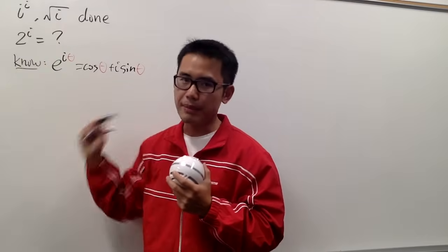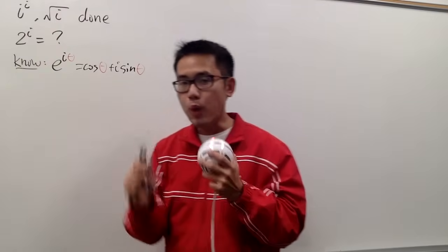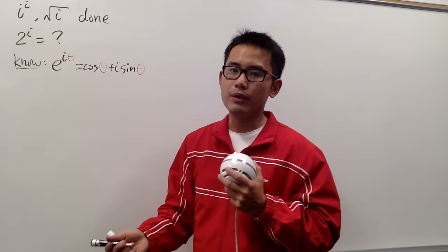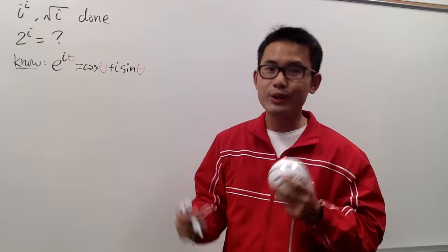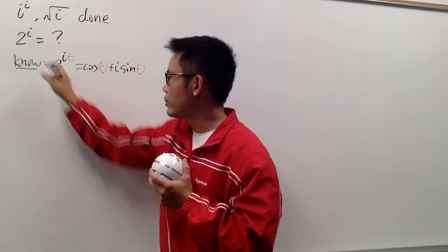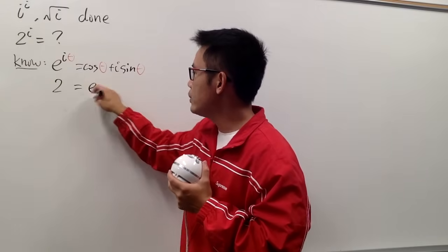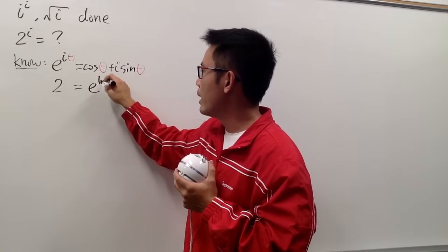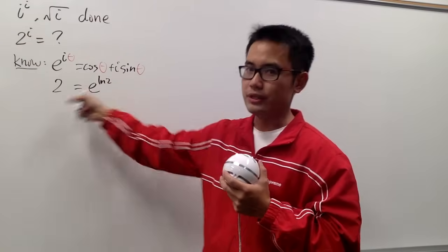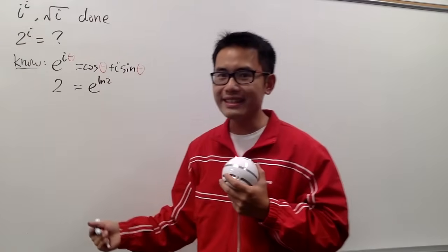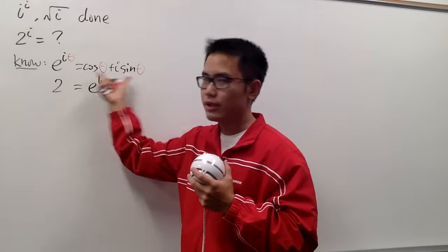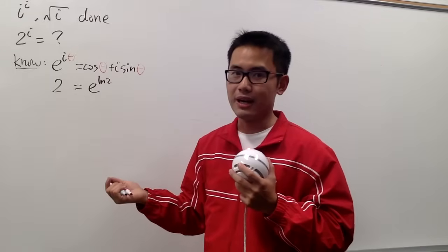We have a 2 for the base, but we want to use e for the base. Is there anything we can do? Sure! We can write 2 as e to the ln 2 power — e and ln cancel, and 2 is equal to 2. The reason we want to do this is so that I can utilize the calculus formula.